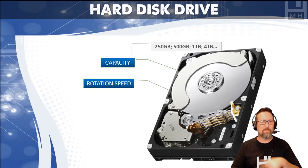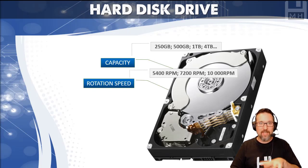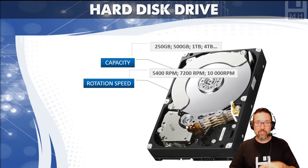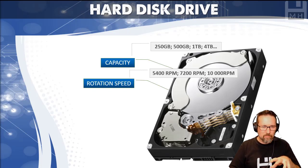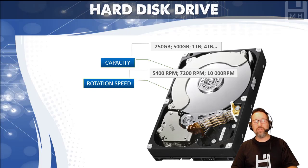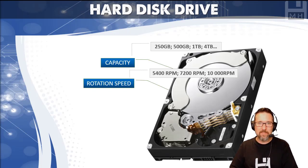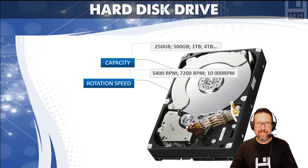Another aspect of an HDD is rotation speed — RPM, revolutions per minute. This is how fast the disk is spinning inside the drive. A slow one runs at 5400 RPM, then we have 7200 RPM, and there are even specs for 10,000 RPM — that's going to use a lot of power, but it will be very fast.